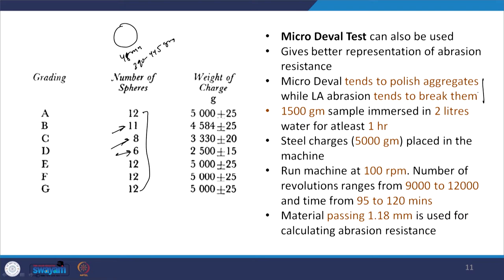How is the micro deval test different from the Los Angeles test? This is also a similar type of abrasion test, but here we use 1500 grams of aggregates which are immersed in 2 liters of water for at least 1 hour — meaning this test is carried out under water. We take 2 liters of water, place 1500 grams of aggregates, keep them immersed, and then place the entire thing inside the abrasion machine. Steel charges with a total weight of 5000 grams are placed along with the water and aggregate materials.